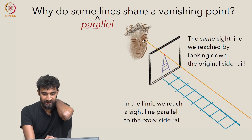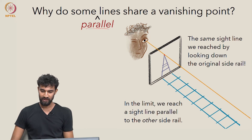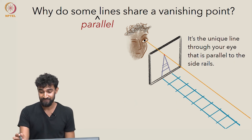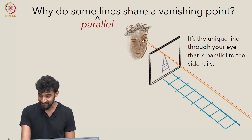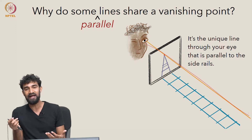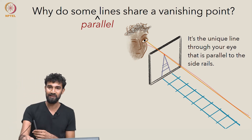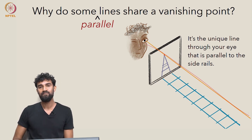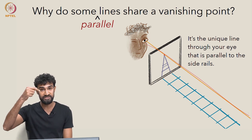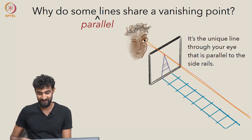And in this way, these two parallel lines share a vanishing point. And in fact, what is that vanishing point? Well, it's because that limiting sight line is the unique line through your eye which is parallel to the side rails. In that family of parallel lines, there's only one line that goes through your eye which is parallel to that family.